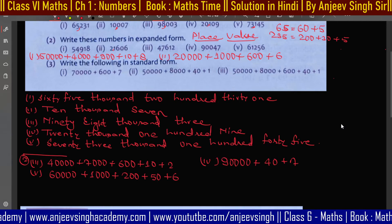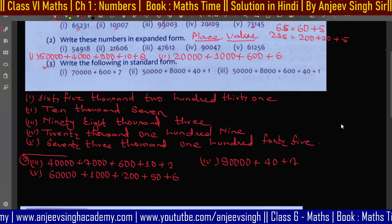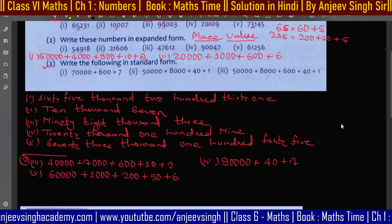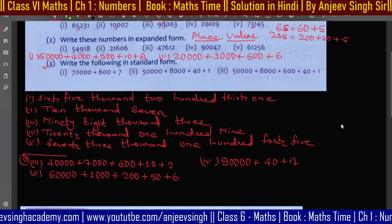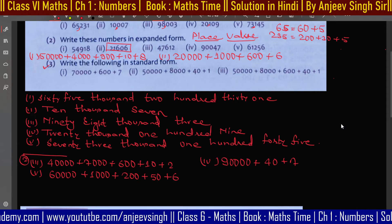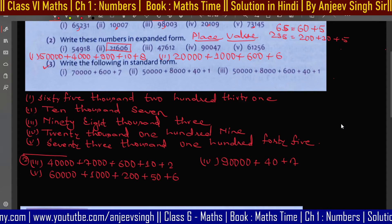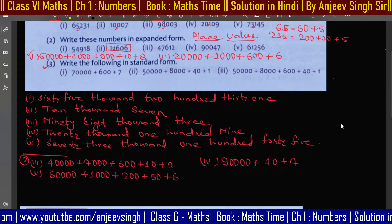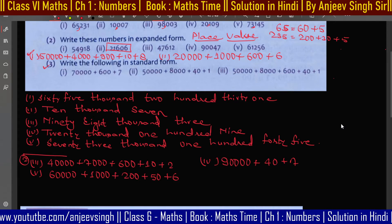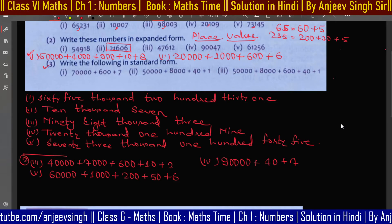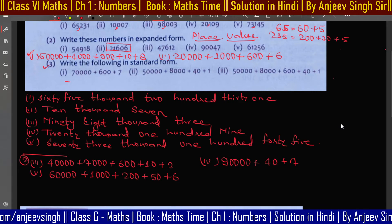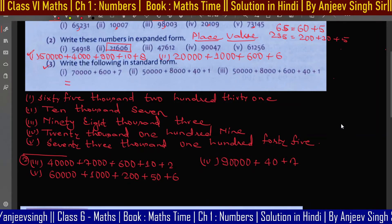Now for question number 3: write the following in standard form. The number written as a regular numeral is called standard form, and what we just wrote is called expanded form. So now it is the opposite — we need to convert expanded form back into standard form.